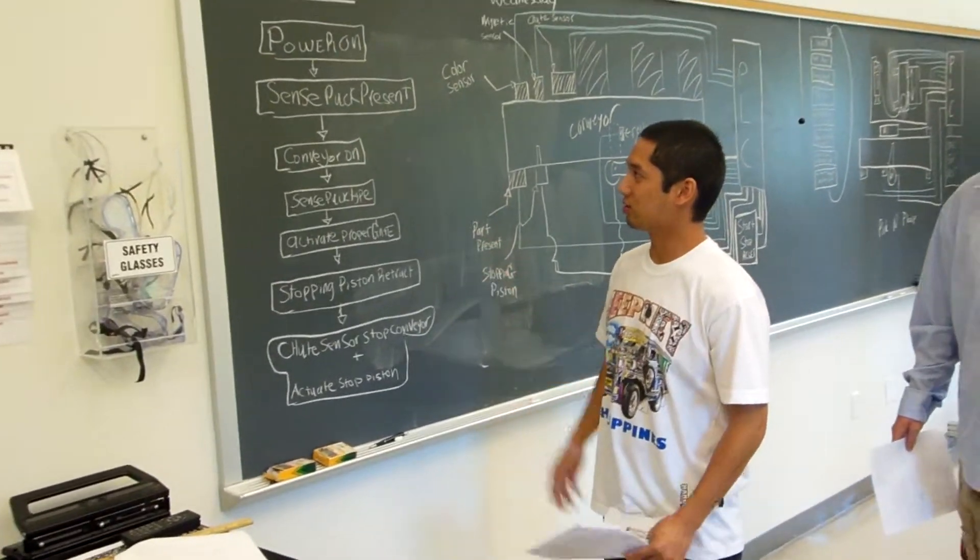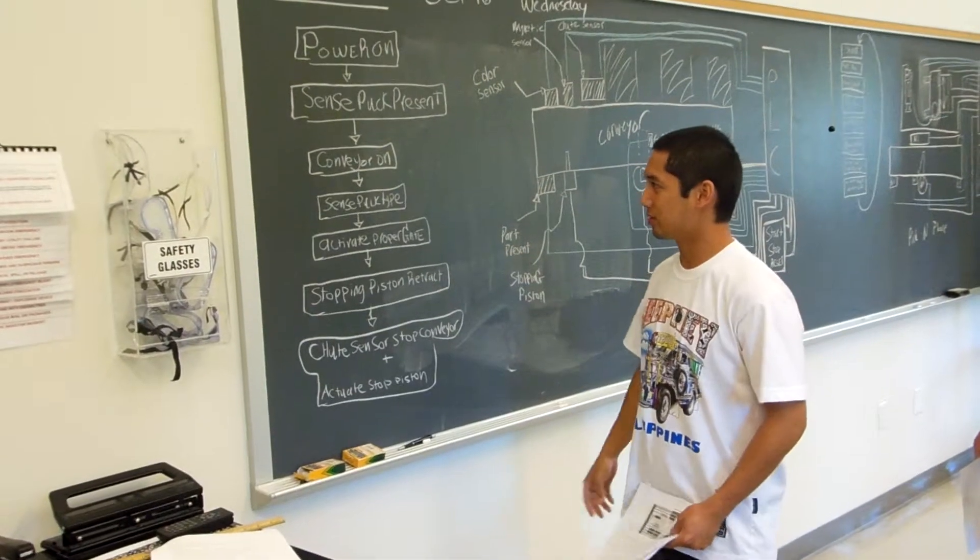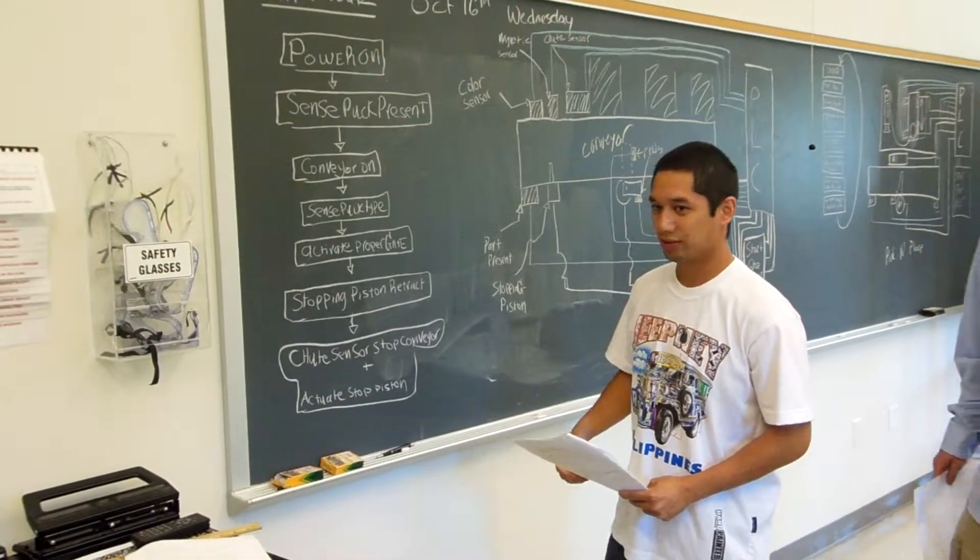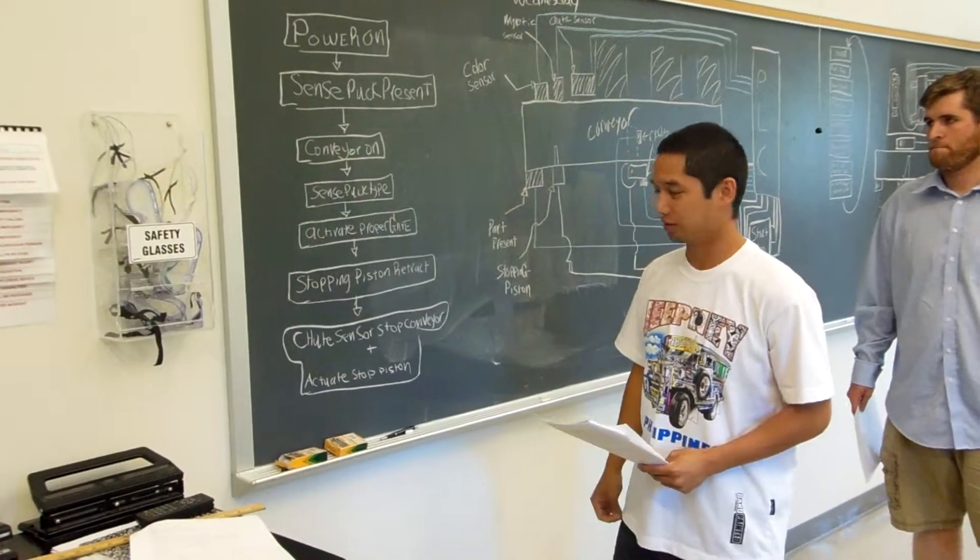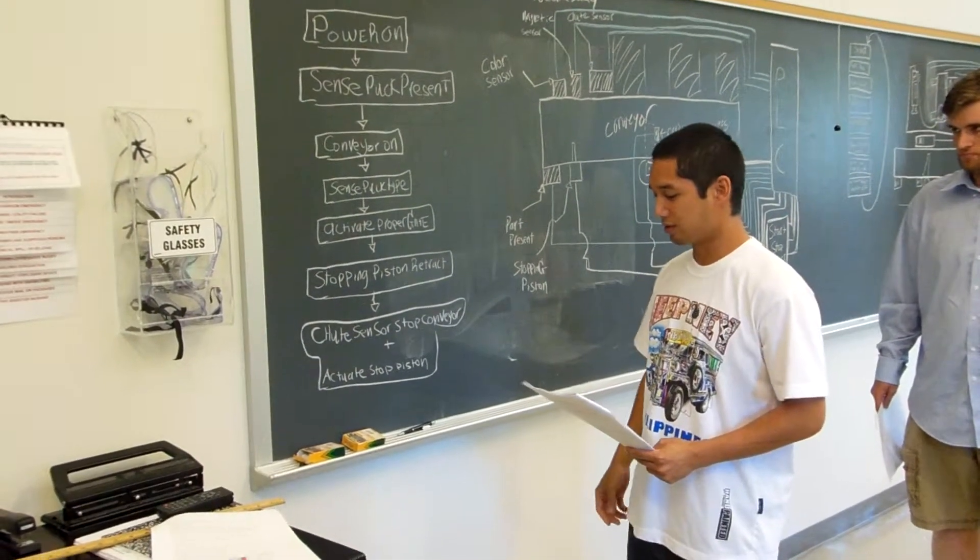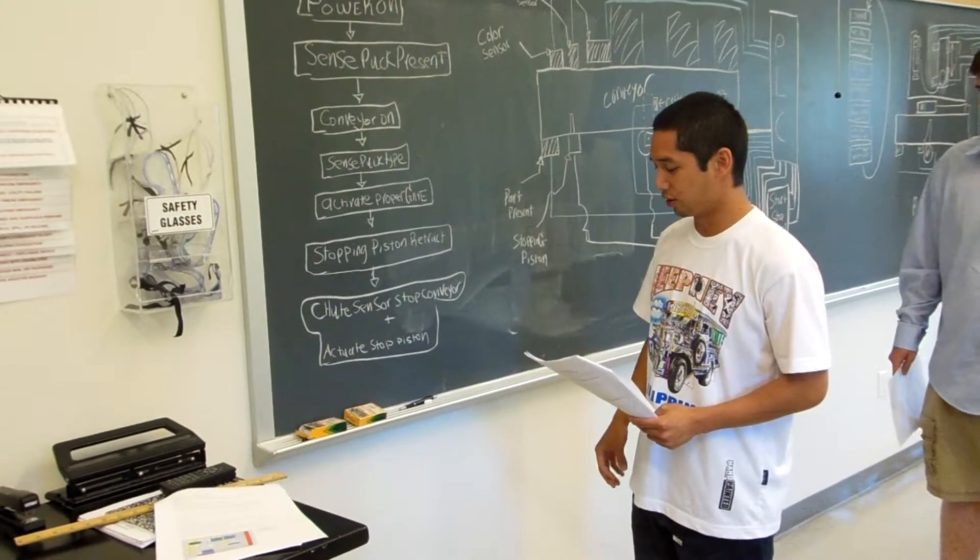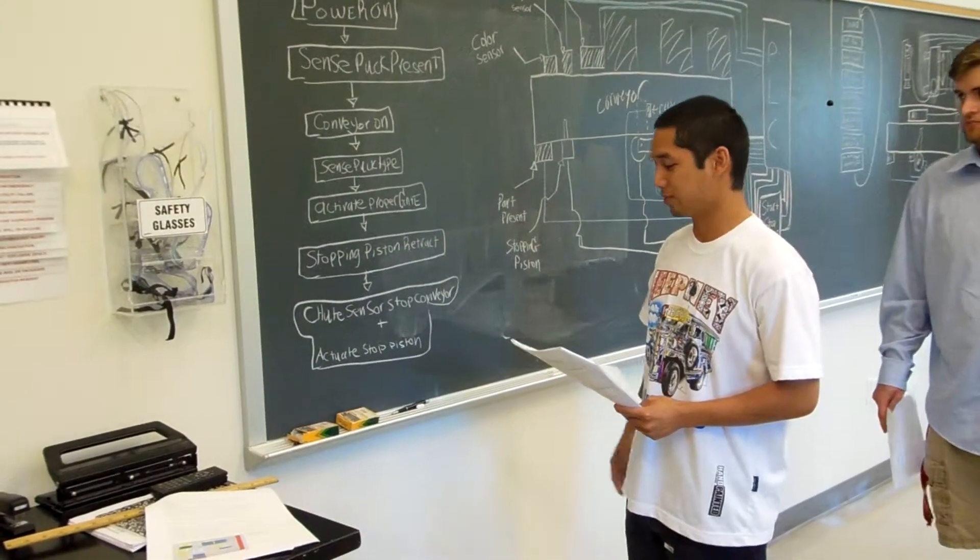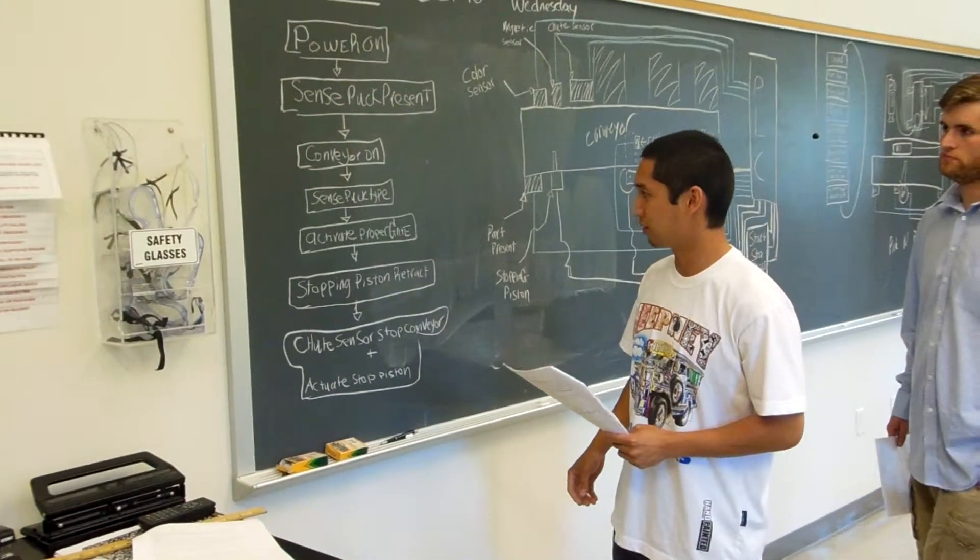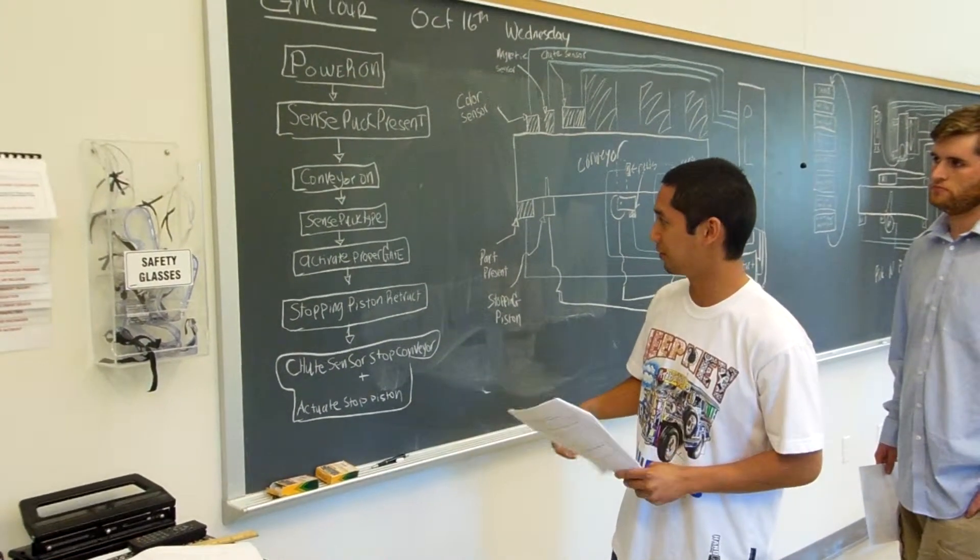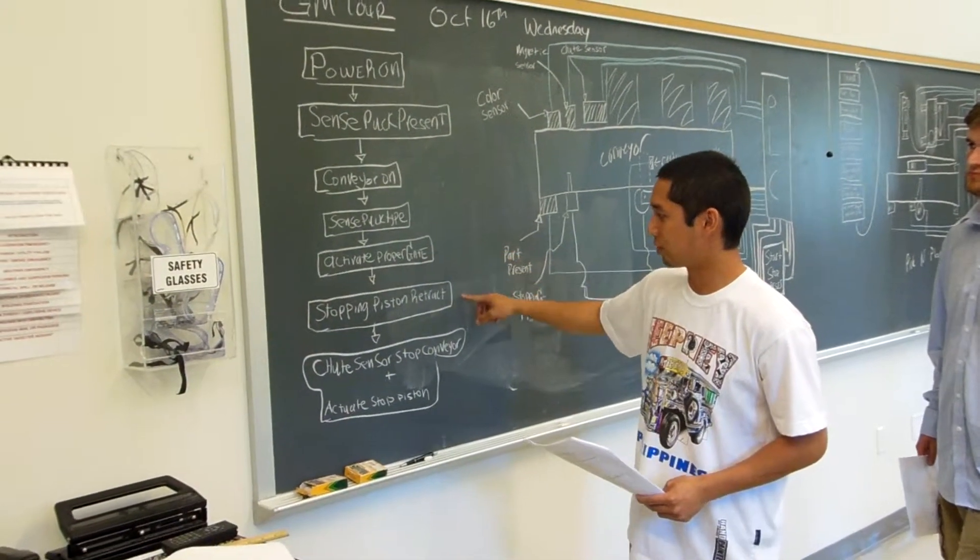First power's on, and the read sensor senses that a puck's present, and it will turn on the conveyor belt. The puck will move on to another read sensor where it'll do a zero-one for a puck present. No lights will turn on if it's black. Zero, one, and twelve will turn on if it's white, and only twelve will turn on if it's orange. Then it'll activate the proper gate and retract the stop.